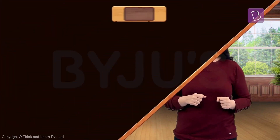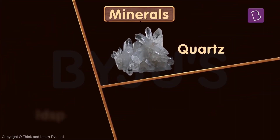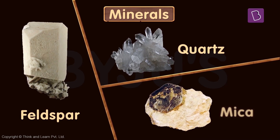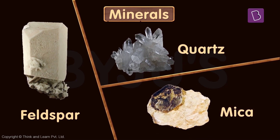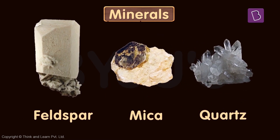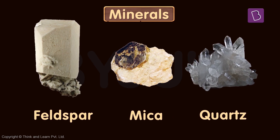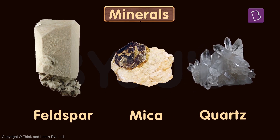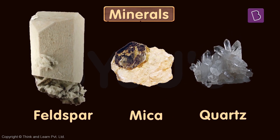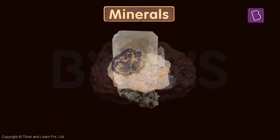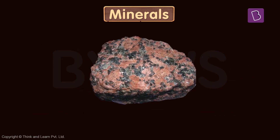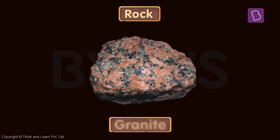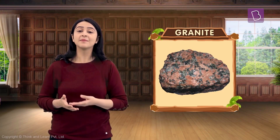For example, quartz, feldspar, and mica are minerals. Now, what if these three minerals are found bundled together? When all these three minerals — glassy looking quartz, dull white feldspar, and mica — are mixed together, we get a rock: granite. Yes, rocks are made up of minerals.